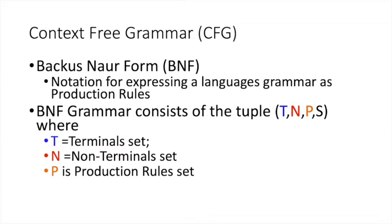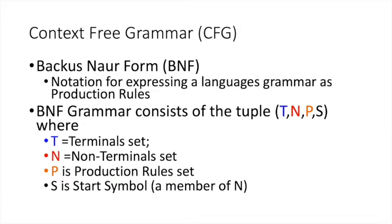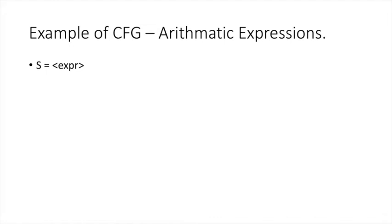Then you must define a set of production rules that show how non-terminals and terminals are put together to complete the grammar. Finally, there is something called a start symbol, represented by S. If all of that is hazy, do not worry — let's see an example. Here I shall present a very simple context-free grammar that can generate any arithmetic expression involving two variables, a and b.